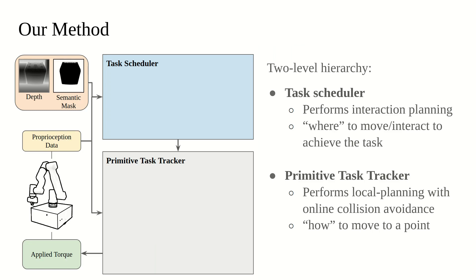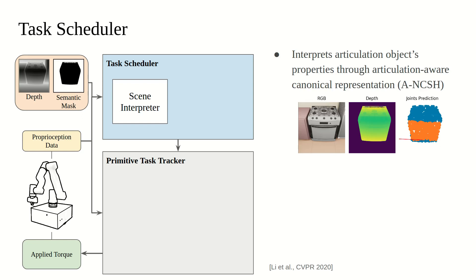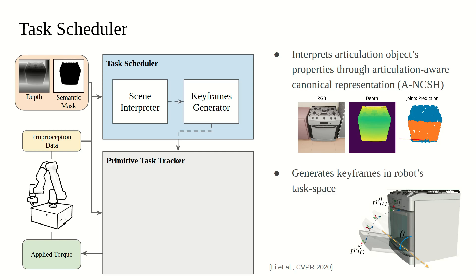The proposed method comprises a two-level hierarchy: a task scheduler that performs the object interaction planning, and a primitive task tracker that follows this generated plan. To generate an object interaction plan, the task scheduler first estimates various scene properties such as the target object's articulation by leveraging an articulation-aware canonical representation called ANCSH. Using this information, the keyframe generator generates a discretized kinematic plan in the robot's task space.